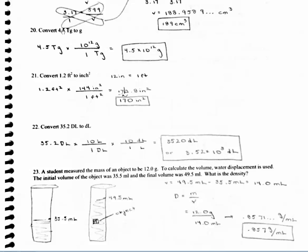For problem 20, as soon as you see a conversion problem, that's going to be dimensional analysis. You've got 4.52 teragrams and I want to convert to grams. Since you're going directly to grams — your base unit — it's a one-step problem. I'm in teragrams right now, so put teragrams on bottom, grams up top. From your table on page 24, 10 to the 12th grams equals one teragram. Since this is in your numerator, you multiply. So 4.5 times 10 to the 12th is your answer in grams. Quick check on sig figs: I've got two here, two here, so I'm good to go.